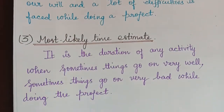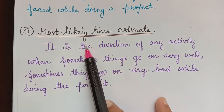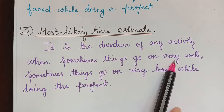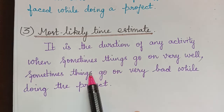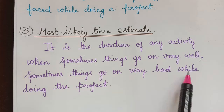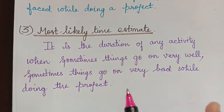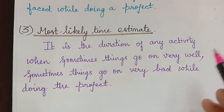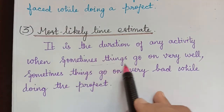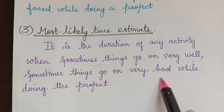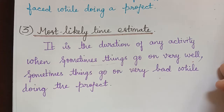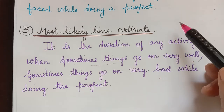The last one, the third time estimate, is the most likely time estimate. It is the duration of any activity when sometimes things go on very well and sometimes things go on very bad while doing the project. So it is half pessimistic and half optimistic, and therefore it is the most likely time estimate. These are the three time estimates we have in PERT analysis.